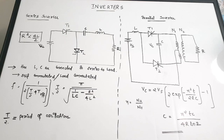This is part 3 of formula revision and concept revision of power electronics. We are going to see about inverters in this video — all basic types of inverters, their circuit diagrams, and important equations. The first types are series inverter and parallel inverter.